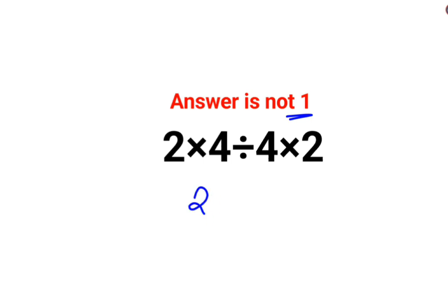A lot of people thought that 2 multiplied by 4 gets you 8, divided by 4 multiplied by 2 which gets you 8, and 8 divided by 8 gives you 1. That, my dear friends, is incorrect.